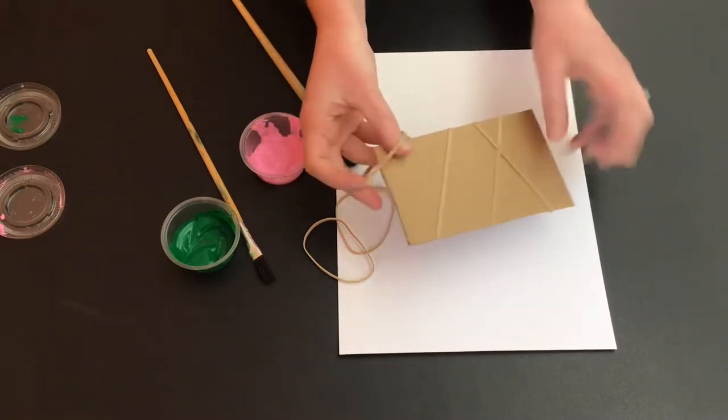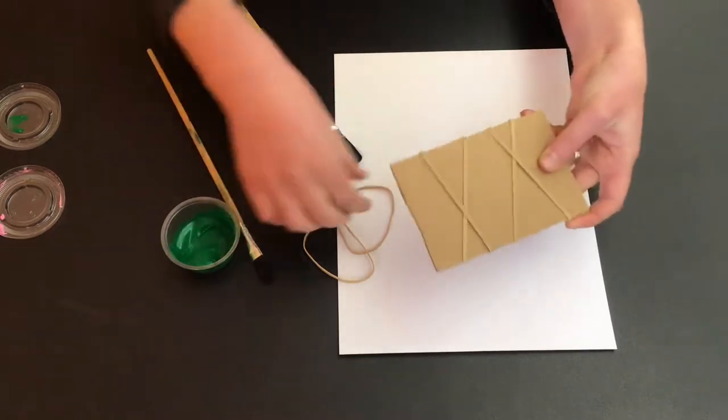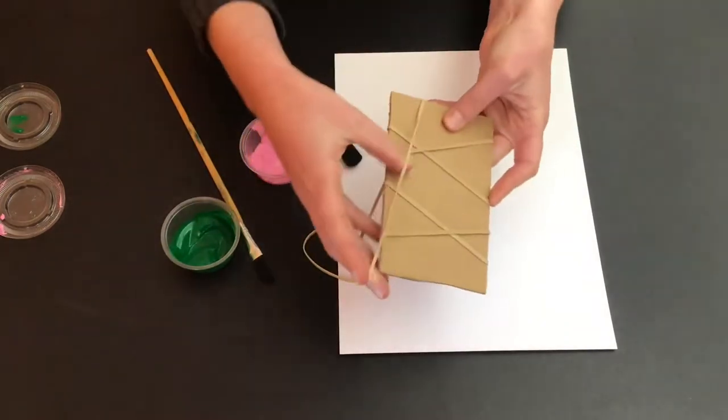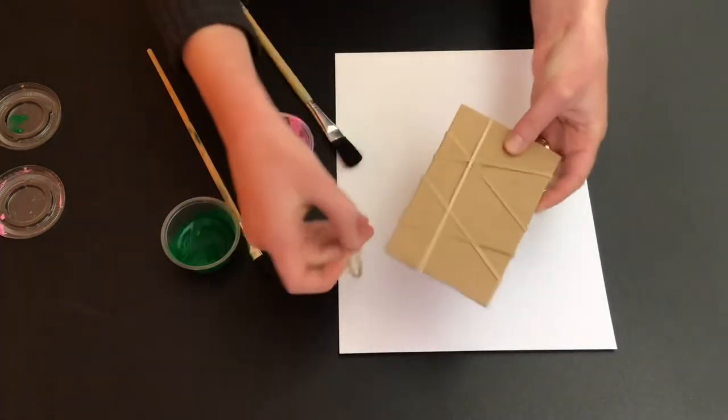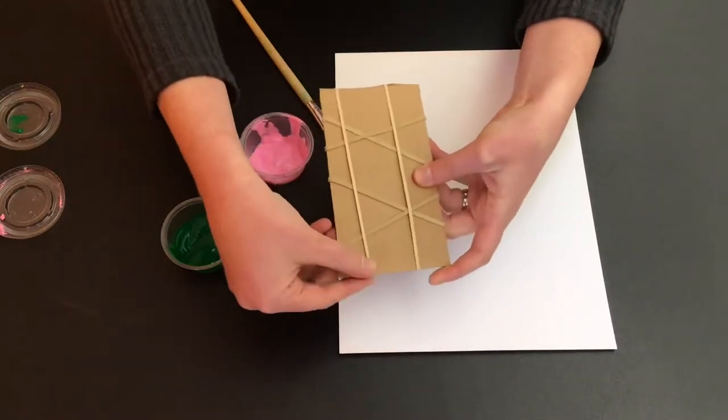Use the rubber bands we provided and put them however you like on your cardboard piece. You can create designs or lines. I'm just going to do it randomly here and see what turns out.